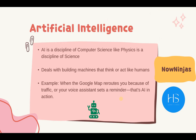What is artificial intelligence? AI is a discipline of computer science — it comes under computer science just like physics comes under science. It deals with building machines that think or act like human beings. You would have seen robotic chess players — those were also based on AI. If you are playing chess against a computer, that is artificial intelligence, where the computer thinks about its next steps. Another example is Google Maps rerouting you to the best path if there is a traffic jam ahead. These are all examples of artificial intelligence.